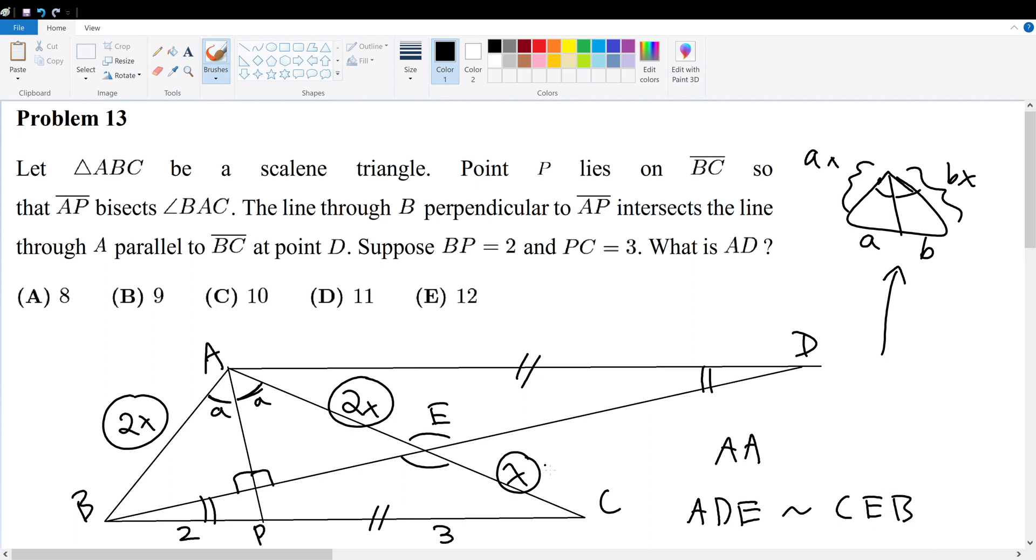Now with this understanding, that must mean that there must be a ratio in terms of these side lengths. So x to 2x is 1 to 2, therefore BC to AD must also be 1 to 2. But we know what BC is: BC is 2 plus 3, which is 5. So therefore we can solve for AD. AD would just be equal to 2 times 5, which gives you 10. Therefore your answer choice would be answer choice C.